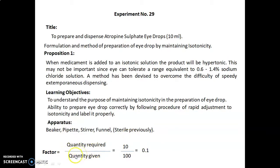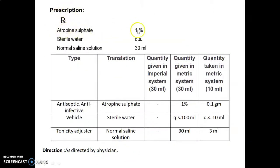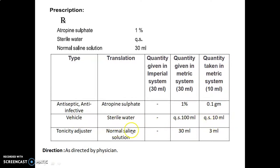Factor calculated as quantity required upon quantity given equals 10 upon 100, which equals 0.1. The prescription given: atropine sulfate 1%, sterile water quantity sufficient, normal saline solution 30 ml. In the formulation table: atropine sulfate used as antiseptic/anti-infective, quantity given 1% means 1 gram in 100 ml — multiply by factor 0.1 to get 0.1 gram. Sterile water used as vehicle, quantity sufficient up to 10 ml. Normal saline solution used as tonicity adjuster, quantity given 30 ml — multiply by factor 0.1 to get 3 ml. Direction: as directed by physician.